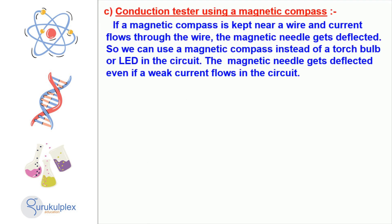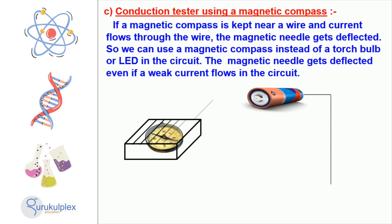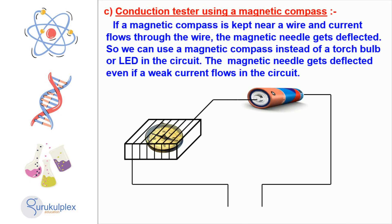Electric current can have a powerful effect on other materials, which can be easily demonstrated by using an electric conduction tester. To construct one, you will need a battery, a wire, and a magnetic compass.